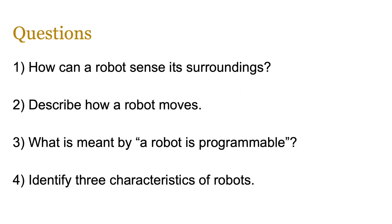Hopefully you can now answer the following questions: How can a robot sense its surroundings? Describe how a robot moves. What is meant by a robot being programmable? You should also be able to identify the three characteristics of physical robots. That's all for now — if you have any questions, let me know in the comments, and I'll see you in the next one.